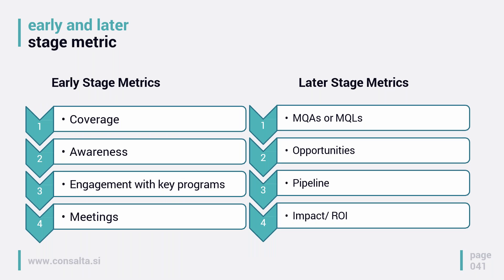In terms of clear, tangible metrics: early stage metrics include coverage. Coverage basically explains how many individuals associated with a specific account we have in our database or have identified through our campaigns. With Peter's bank — if we only have Peter, the coverage is pretty bad. If we have Peter and four other co-workers with their preferences, the coverage is actually good. Awareness is clear — what is their level of awareness about us. Engagement is similar to what we were using before — how are these people engaging with what we're providing, pieces of content, responding to meeting invitations, et cetera.